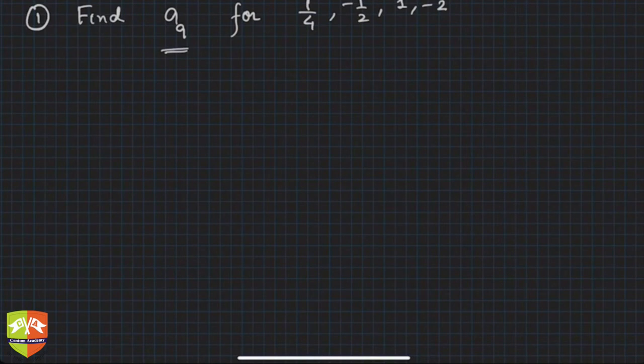Number of terms has to be natural numbers only. Number of something cannot be anything but natural number. The elements, the members of GP could be anything, there is no restriction as to it has to be a natural number, but number of terms has to be natural numbers. You cannot have 22.5 term. Quick, find out a9. Tell me what is the first term in this, use the formula.